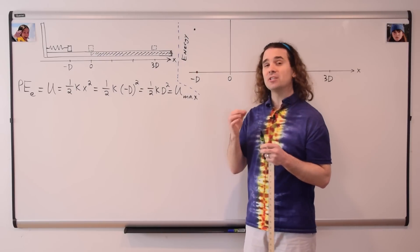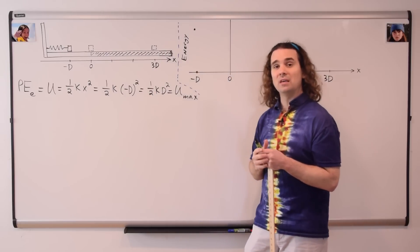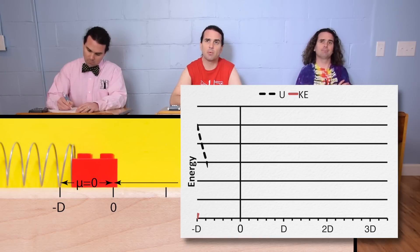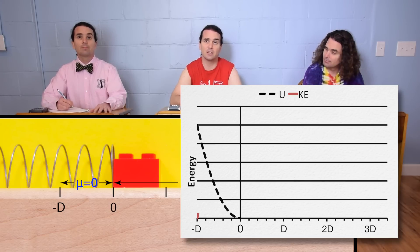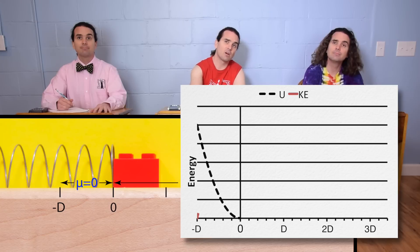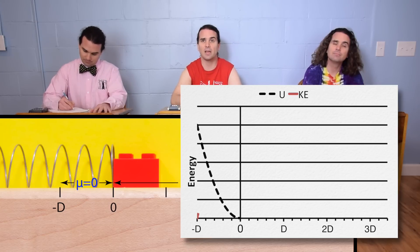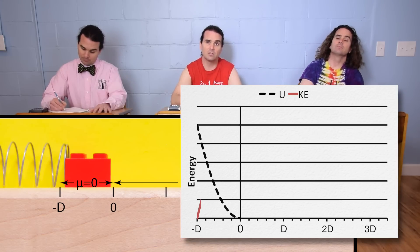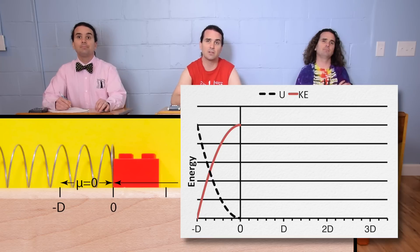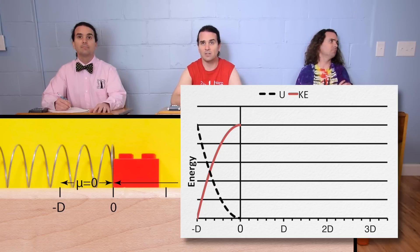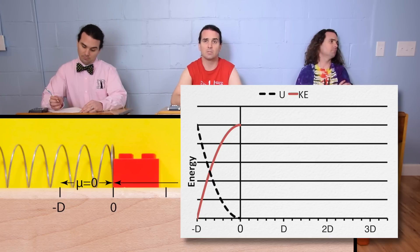What happens to the energies as the block moves from negative capital D to the equilibrium position? Because the elastic potential energy is proportional to x squared, it will decrease as an x squared function. And because the surface is frictionless and there is no force applied, mechanical energy is conserved. Therefore, elastic potential energy will be completely converted to kinetic energy as the block goes from x equals negative D to x equals zero. So kinetic energy will increase as an x squared function. When the block gets to zero — the equilibrium position — x equals zero, so the elastic potential energy will be zero, and all of the elastic potential energy will have been converted to kinetic energy. In other words, the kinetic energy will be at its maximum value at the equilibrium position and will have the same value as the elastic potential energy did when the block was at negative D.